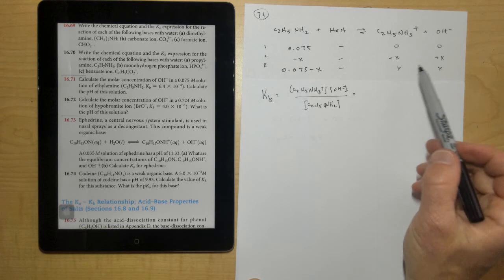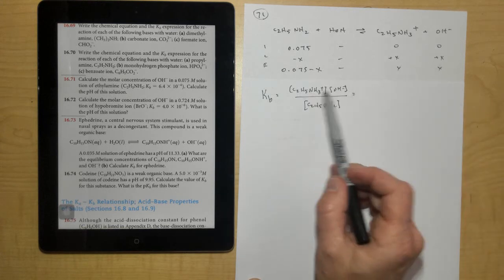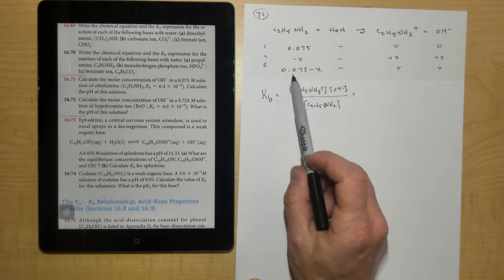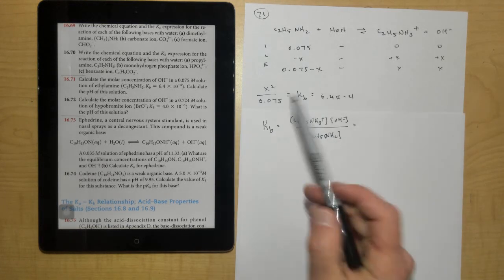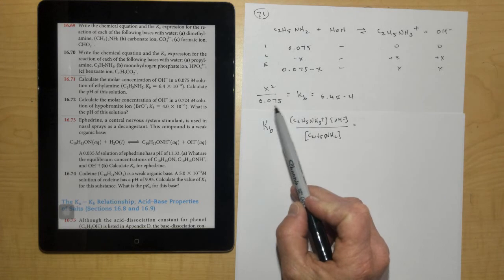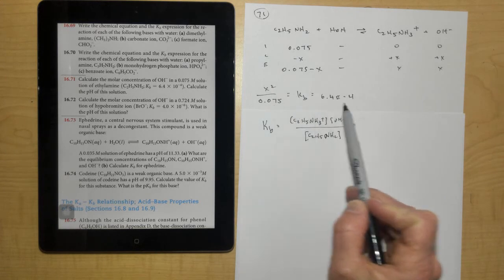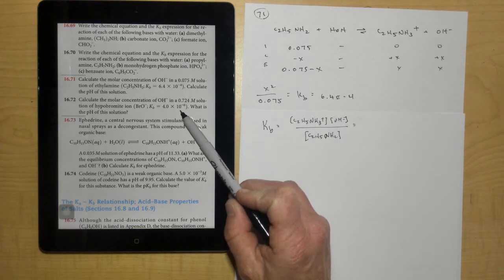And then this is equal to x times x, so x squared will go on the top, divided by 0.075, and ignore that x and say that it's small. So we end up with x squared over 0.075 is equal to the KB that they give us, which is 6.4 times 10 to the negative 4th.